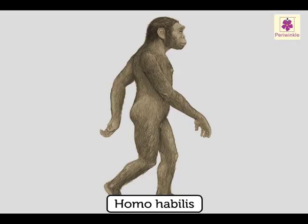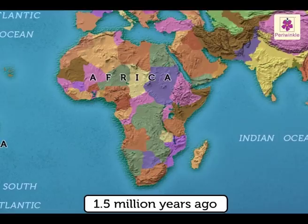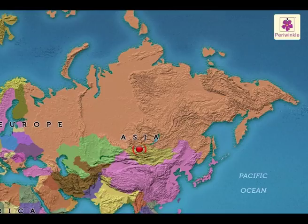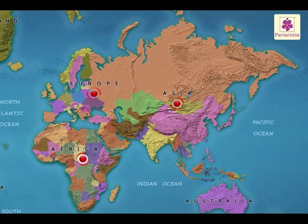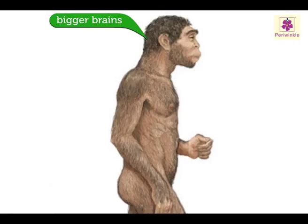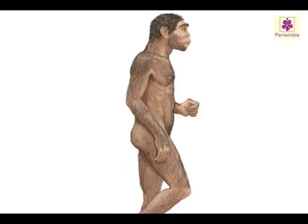An even more advanced type of early man appeared around 1.5 million years ago, again in Africa, but they spread to Asia and Europe. This was the first time that early human fossils were found outside Africa. They had bigger brains and smaller teeth, and from the neck below they resembled today's human beings. They were called Homo erectus.